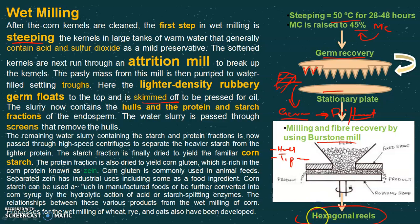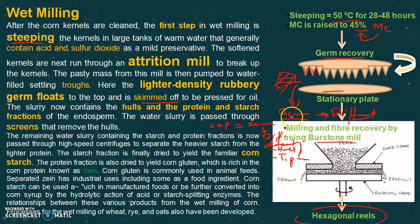Mostly hexagonal reels are used for this separation. Unfortunately, starch and proteins cannot be separated through these screens because their size is almost the same. However, since starch and proteins have different densities, we have the option to separate them using centrifugation. By using centrifugation, we can separate two same-sized particles into two fractions based on their different densities.